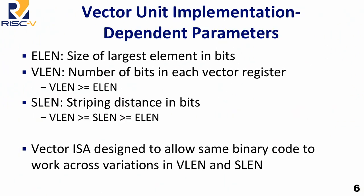To make it work across a range of designs, there are a few parameters. ELEN is the largest single element you can operate on — typically 32 or 64 bits. VLEN is how many bits there are in each vector register. SLEN is what we call the striping distance, used to control the trade-off between wiring and spatial locality in the memory system — usually set to the width of your memory port. The goal is to run the same binary code even with different VLEN and SLEN on different implementations, following a few simple rules.